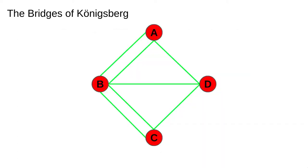Euler was able to solve the problem by abstracting away from bridges in Königsberg to nodes and edges. To see that a walk is impossible, notice that, except at the start and end of our walk, when we arrive at one landmass represented by a node, we must leave again by a different bridge, represented by an edge. This means, except at the start and end of the walk, all nodes must have an even number of edges. However, A, C and D have three edges, while B has five. Thus, no walk is possible where we cross all the bridges only once.